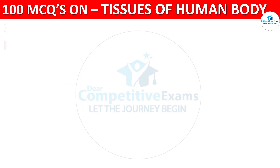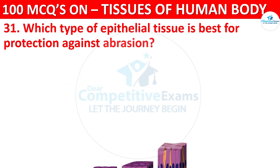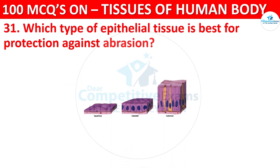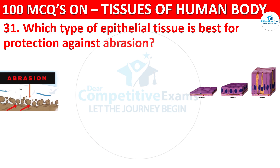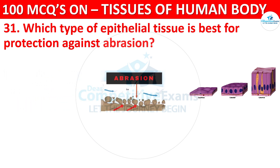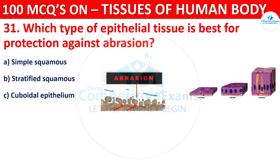Question number 31. Which type of epithelial tissue is best for protection against abrasion? Options are Simple Squamous, Stratified Squamous, Cuboidal Epithelium, or Transitional Epithelium.